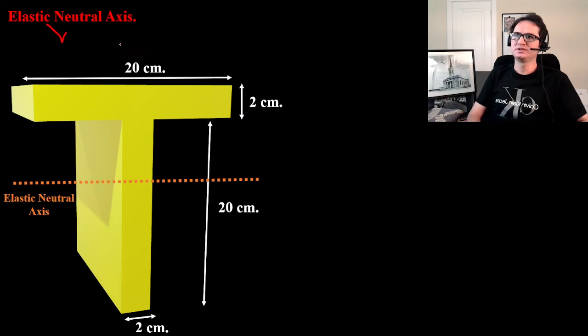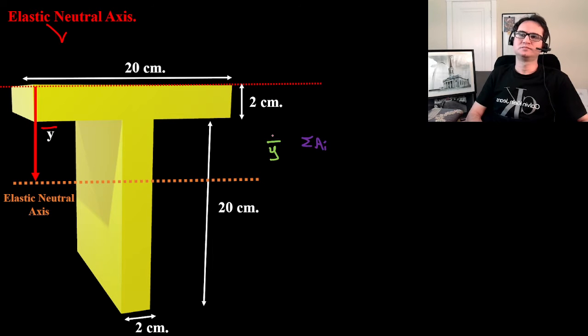First of all, in calculation of elastic neutral axis, that's the centroid for the shape, and that's y-bar. And that's the formula for that: it's a centroid formula, that's summation of Ai times yi over summation of Ai.